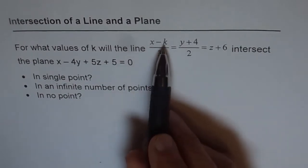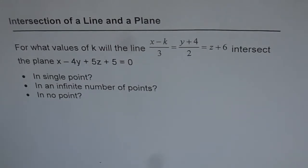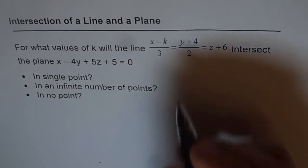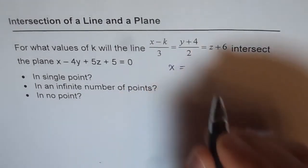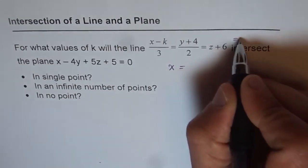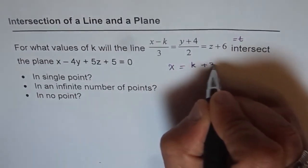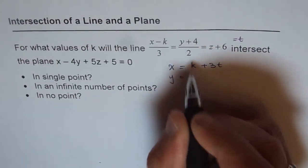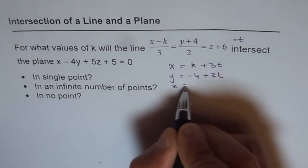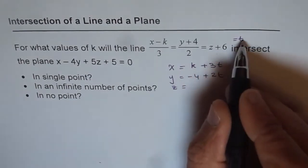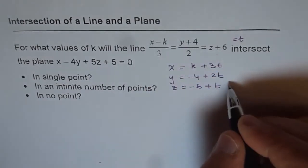We need to find the value of k so that we can have all three conditions. Let's consider the parametric form of the equation. We can write x as k plus 3t, y as minus 4 plus 2t, and z as minus 6 plus t.